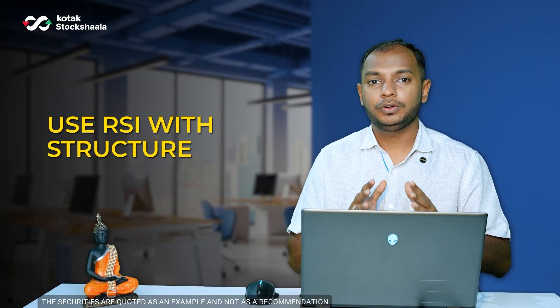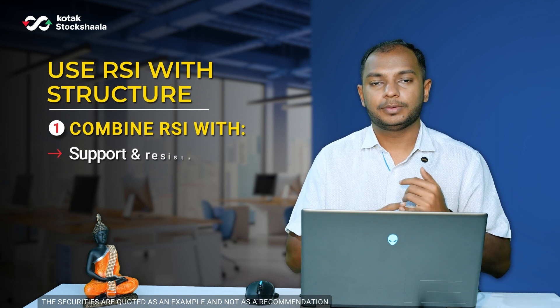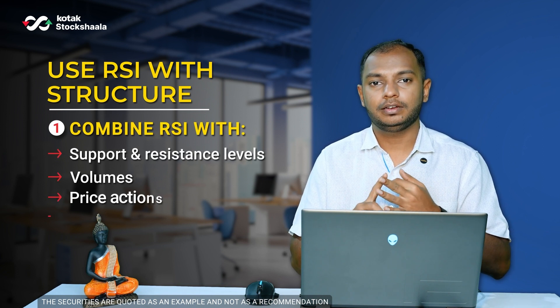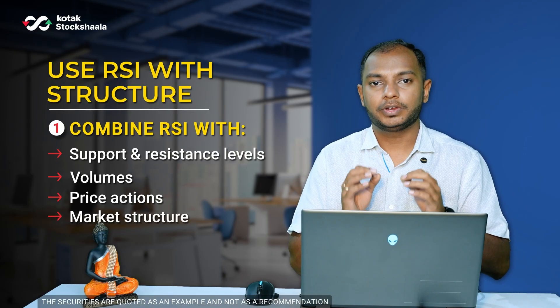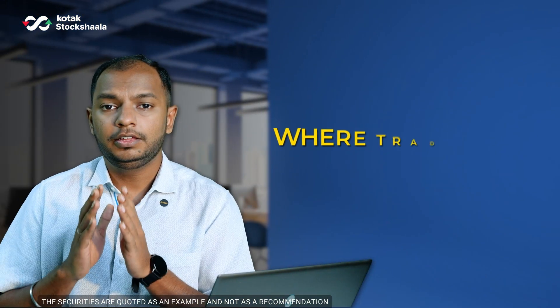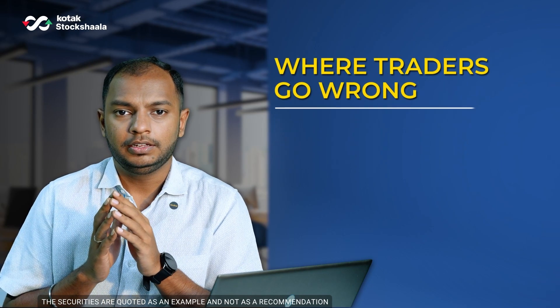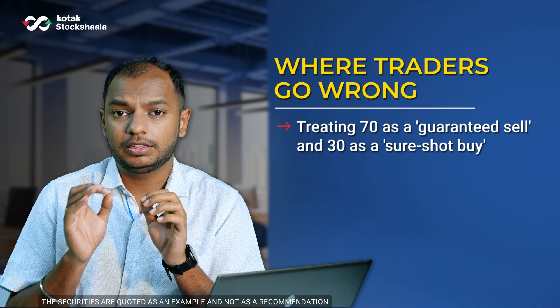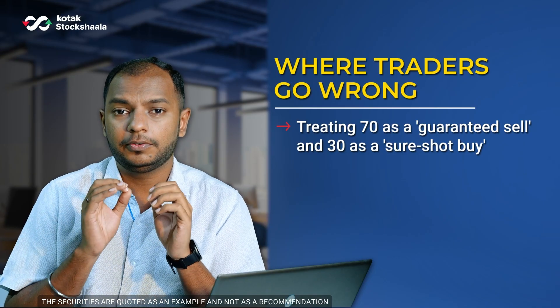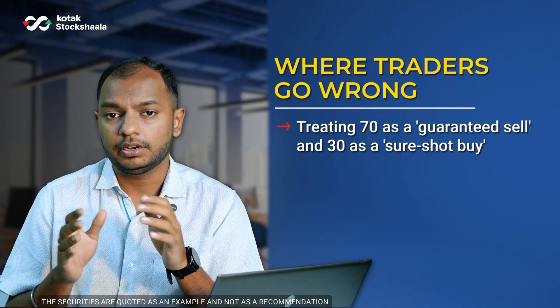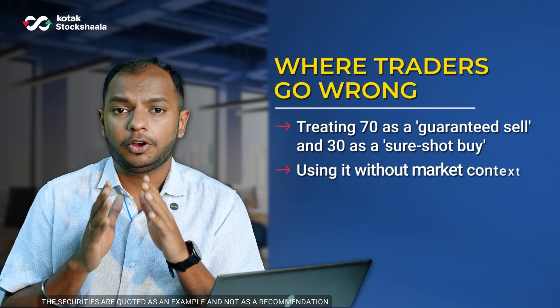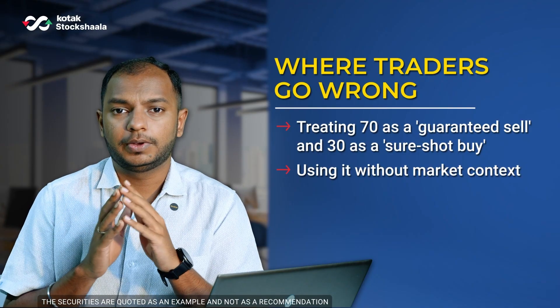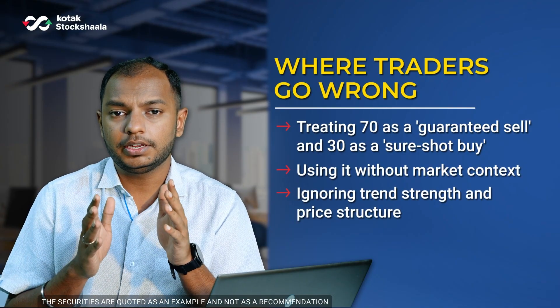While using RSI, don't use it alone — always use it with support and resistance levels, volumes, price action, and market structure to get better entries and exits. Here's where traders go wrong: they treat RSI at 70 as a sure-shot sell and RSI at 30 as a sure-shot buy. Some also use it without any market context, and many use it in isolation without other tools for confirmation. Use it to support your view, but not to create one blindly.